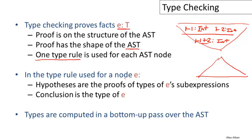In general, the type rule used for a particular AST node has hypotheses that are the proofs of the types of E's sub-expressions. Whatever expressions make up E, we need types for them first. The conclusion at that node will be the type of the entire expression E. This way, types are computed in a bottom-up pass over the abstract syntax tree. I assign types to the leaves first—like here, one has type int and two has type int. Then the types flow towards the root. I compute the next level of the AST and so on. Once I've computed the types of all sub-expressions of a node, I can compute the type at that node, then continue to the root.